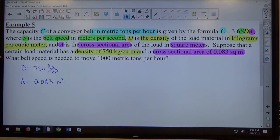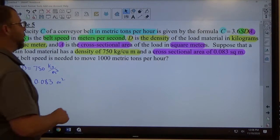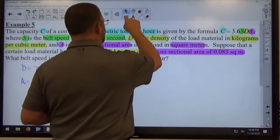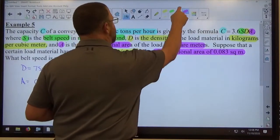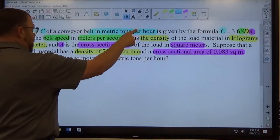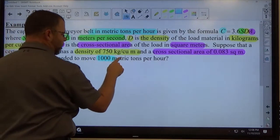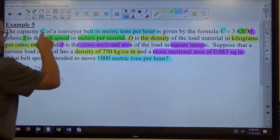And continue to read, what belt speed is needed to move 1,000 metric tons per hour? So C, metric tons per hour. So this is 1,000 metric tons per hour. That's going to be what C is.